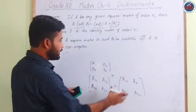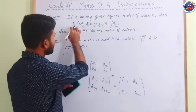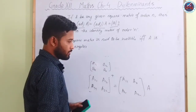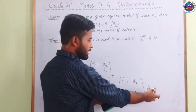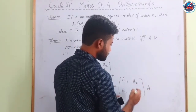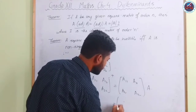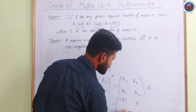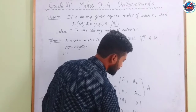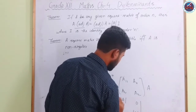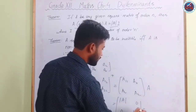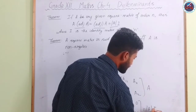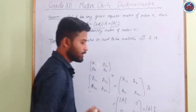After matrix multiplication of A with adj(A), we get the determinant of A on the diagonal and zeros elsewhere — that is, |A| 0 / 0 |A|. Taking |A| as a common factor, we are left with the identity matrix I, proving the result.